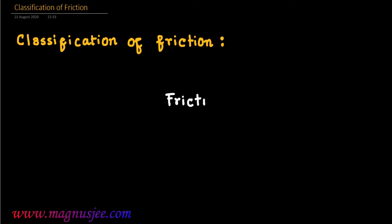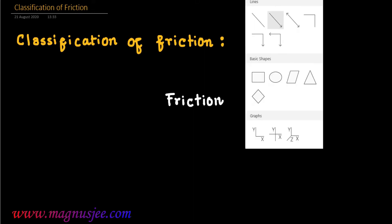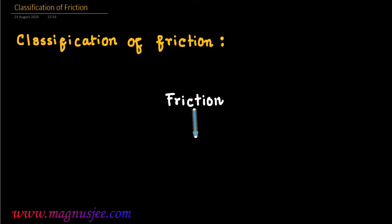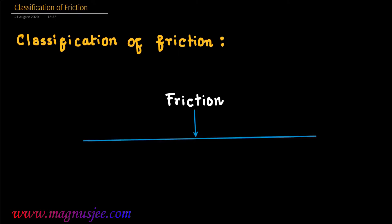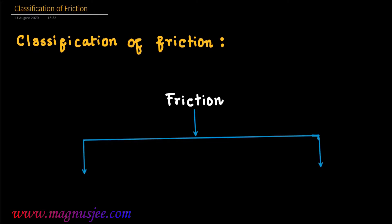Classification of Friction. Friction can be classified into two types. Number one type is external friction, which we can write on the left hand side, and on the right hand side we can write internal friction.